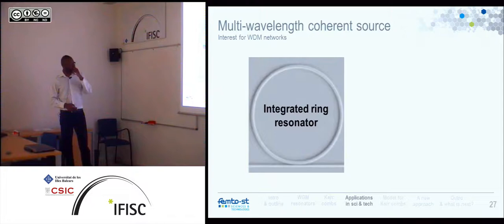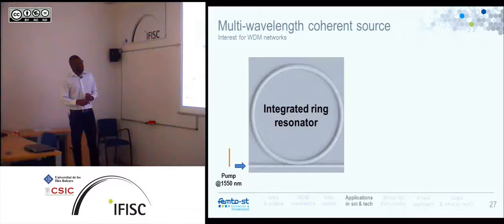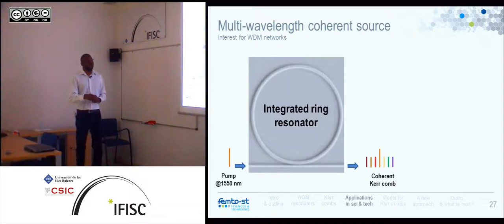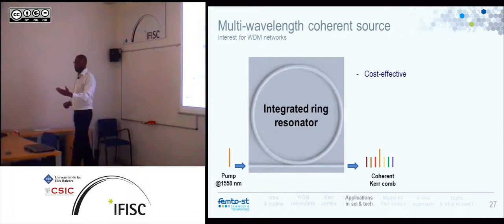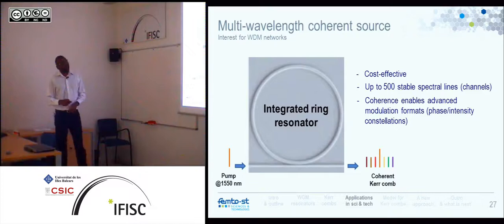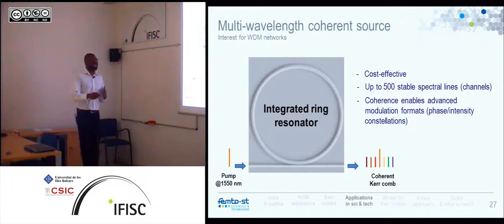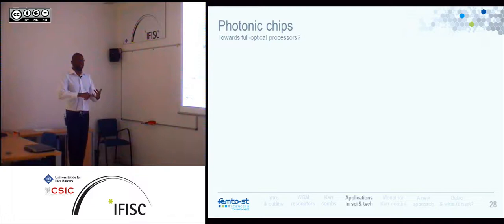Another very interesting application is WDM telecommunications. These combs can be considered as multi-wavelength coherent sources. We pump the resonator at 1550 nanometers — a typical telecom wavelength — and at the output we have a coherent comb. This can be used for WDM telecommunications: it's cost-effective, it can have up to 500 stable spectral lines, and the coherence between the modes enables advanced modulation formats — including not just amplitude modulation but also phase modulation, since all spectral lines are correlated.